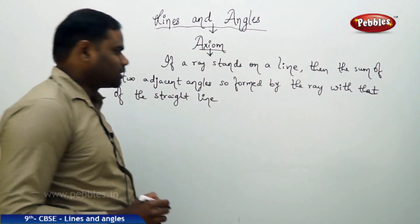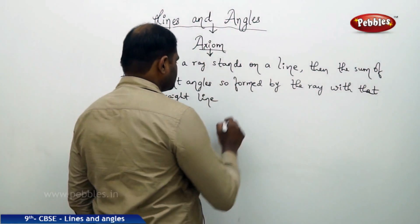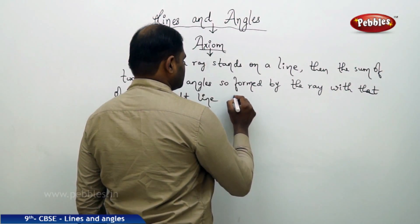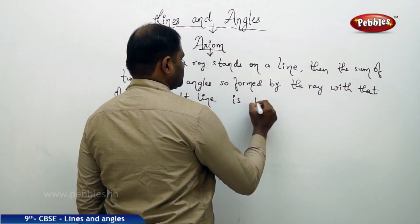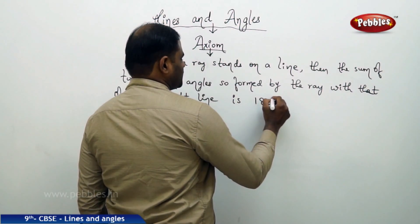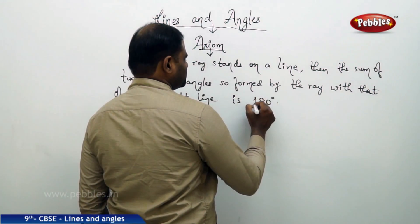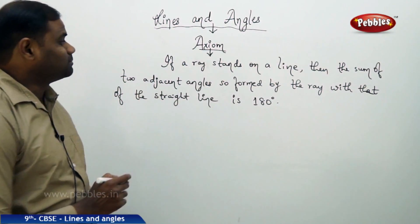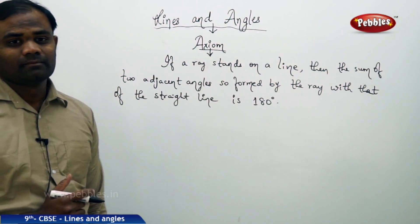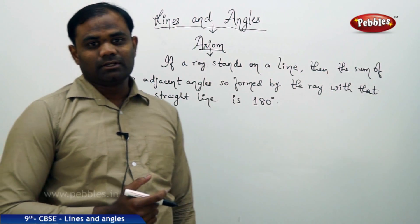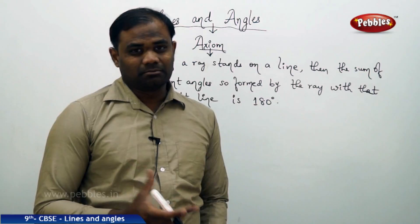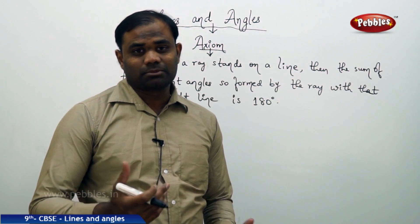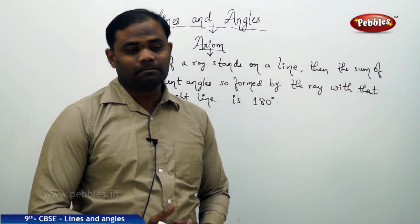...is 180 degrees — that is how the property or the axiom states. Let us see this axiom through a diagrammatic representation to understand the concept more easily.